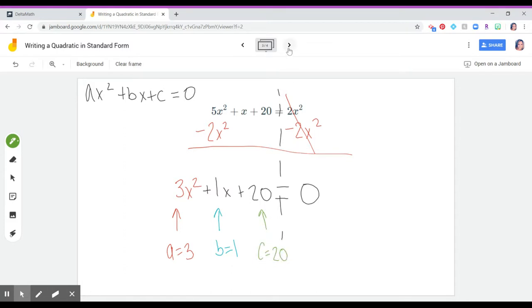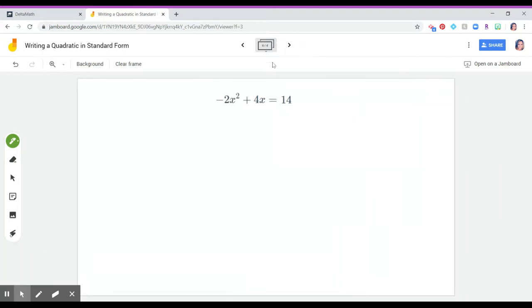I have one more example. And then hopefully that will be enough to help explain everything that you need to do for our next assignment. So if we take a look here, we have negative 2x squared plus 4x equals 14.